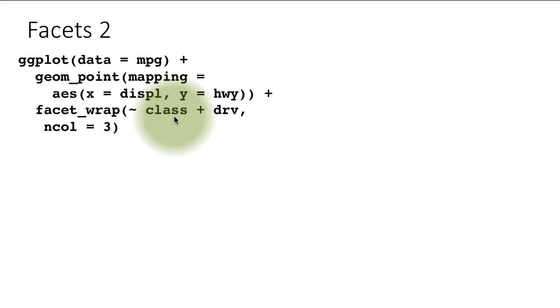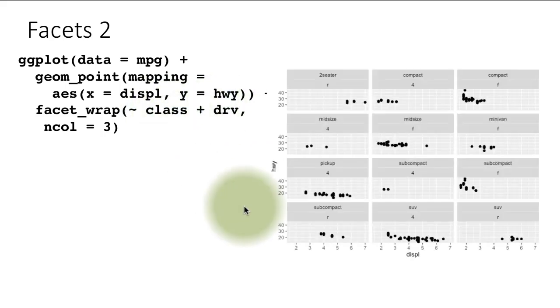If you say class plus drive, there are 21 different possible combinations. We're saying divide the data into different sets based on the combination of these values and plot it. Why are we not seeing 21 different facets? That's because not all the 21 possible combinations occur. Only the 12 combinations shown here actually occur in the data.